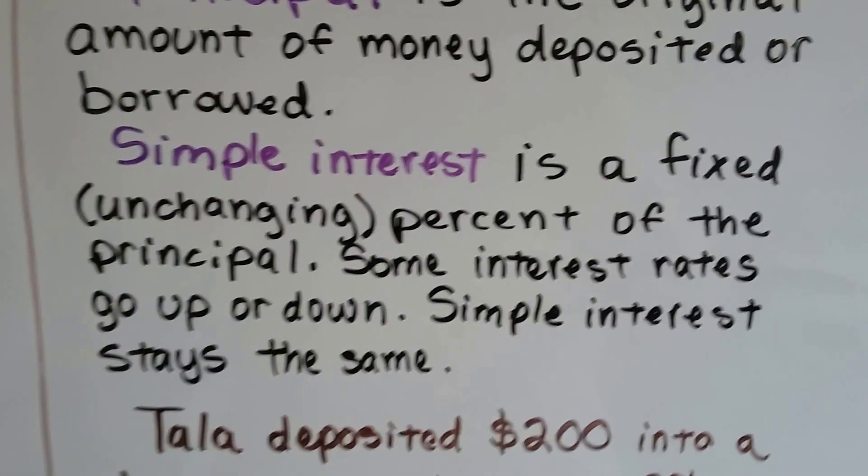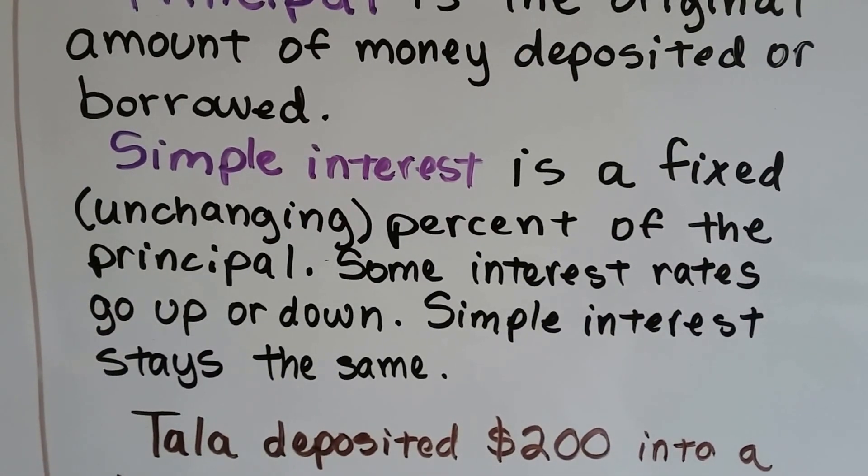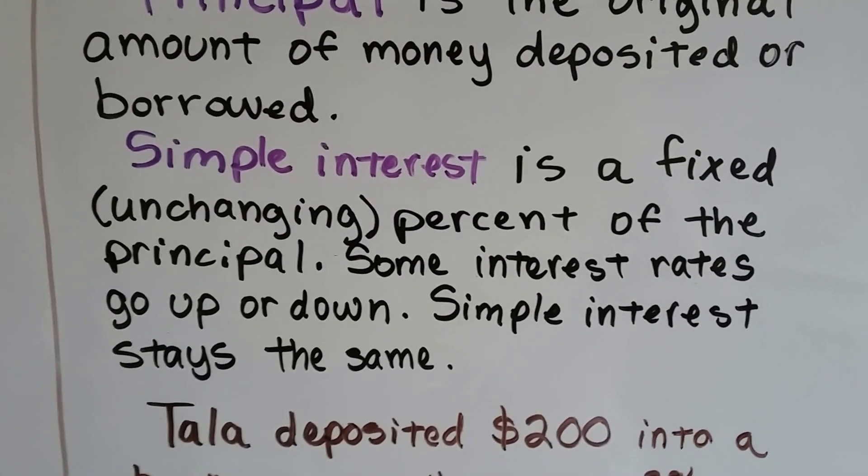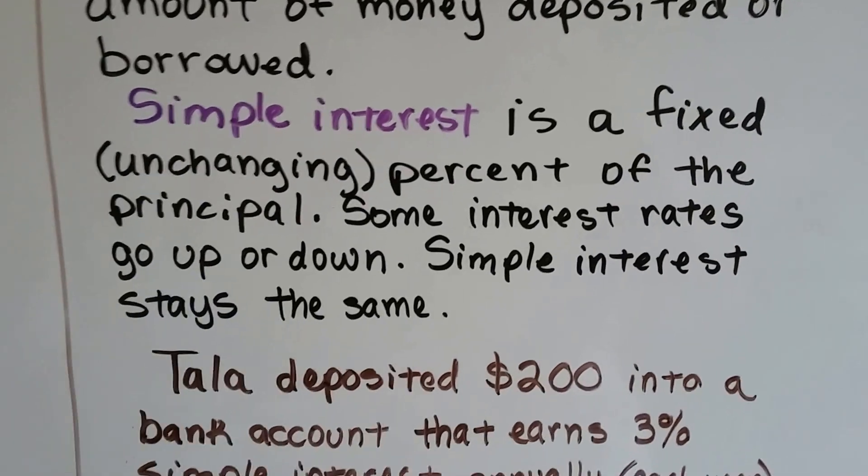Simple interest is a fixed, unchanging percent of the principle. Some interest rates go up or down. Simple interest just stays the same. So here's our problem.